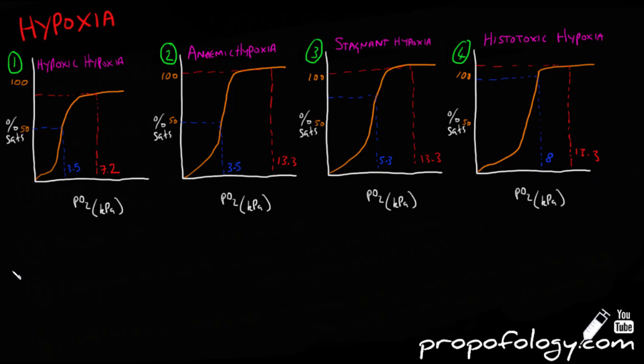So let's look at the graph of hypoxic hypoxia. You'll see that the arterial saturations are less, and the actual PaO2 is less. It should be 13.3, it's actually 7.2, and that's due to the actual physical lack of oxygen in the blood.